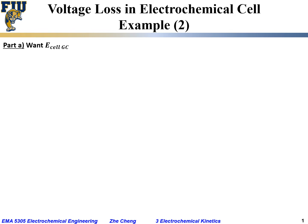Part A of this problem: we know the current density for the electrochemical cell and we want the cell potential in galvanic cell mode. The cell voltage in galvanic mode would be the equilibrium cell potential minus the total voltage loss, which includes three parts: the overpotential loss at the anode, overpotential loss at the cathode, and the ohmic voltage loss, which is the absolute current density times resistance.